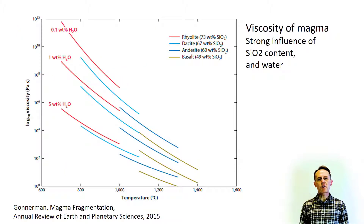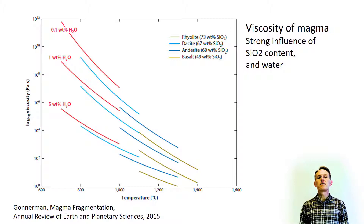The viscosity of magma is extremely variable. This relates both to the nature of silicate melts deep in the Earth, with no or minor quantities of free gas phase, but it is also influenced by gas bubbles in the magma that form when magma approaches the surface and a free gas phase forms because of pressure release.